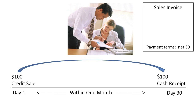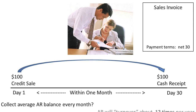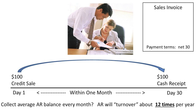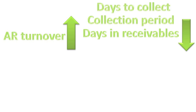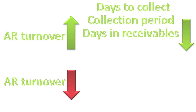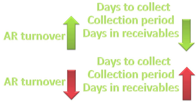A 30-day collection period, i.e. one month, equates to an Accounts Receivable Turnover Ratio of 12 times per year, meaning the company is able to sell and collect an amount equal to its average Accounts Receivable balance 12 times per year. The larger the AR Turnover Ratio, the more often they sell and collect during the year, and the shorter the days in receivables will be, which is also known as the collection period and the days to collect. The smaller the AR Turnover Ratio, the less often they sell and collect their AR during the year, and the longer they will take to collect on their receivables.